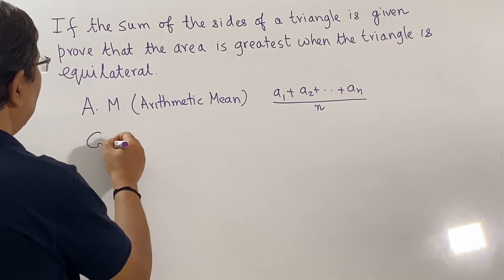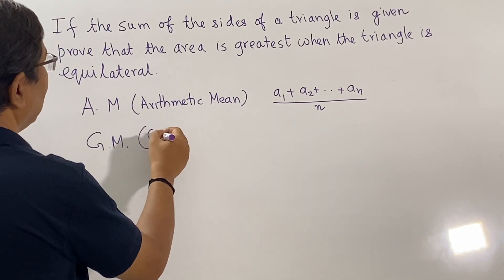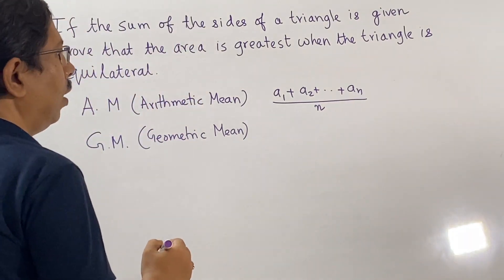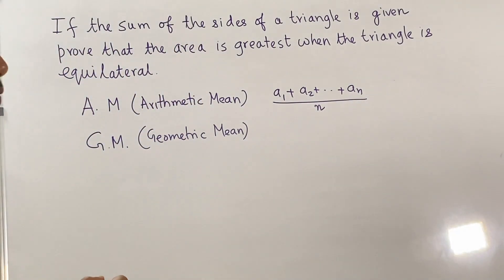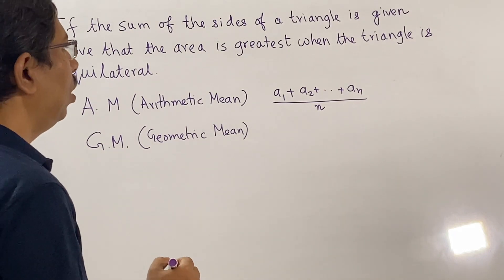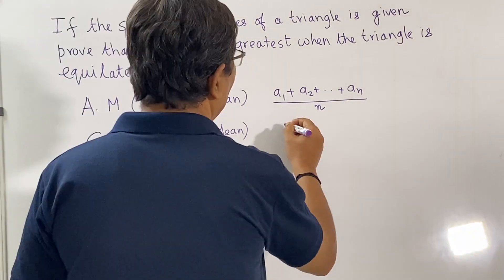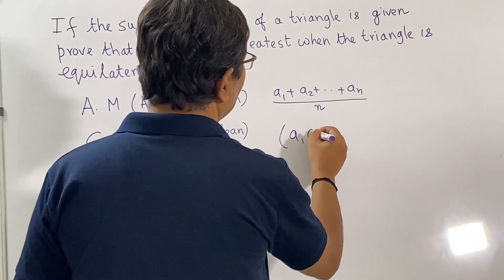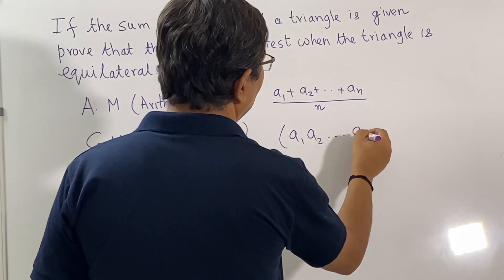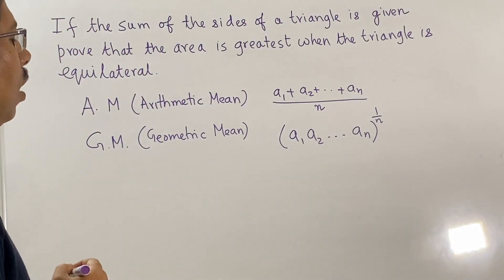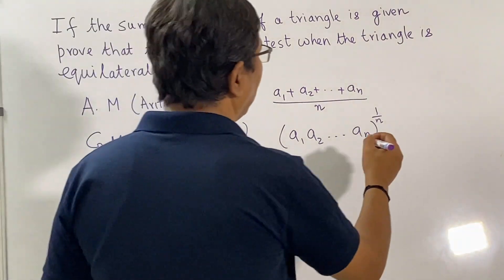The geometric mean, abbreviated as GM, is only defined when we are dealing with positive quantities. So geometric mean is only defined if we are dealing with positive quantities, and in that case we have it to be equal to the product of A1 into AN raised to the power 1 by N.